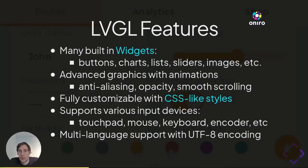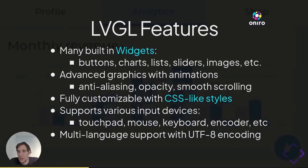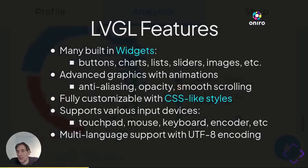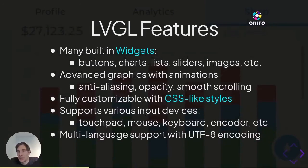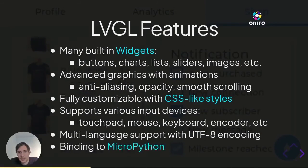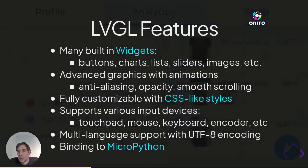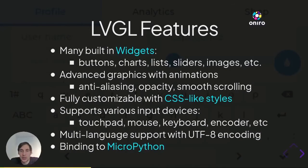We have an internationalization library which automatically collects strings from the source code and exports them into PO files where you can translate them. After that, the library builds source code from the translations again, allowing you to select the language of the UI at runtime. LVGL also has a binding to MicroPython, which gives you Python-like syntax on embedded devices, allowing you to create UIs using LVGL through a Python API.